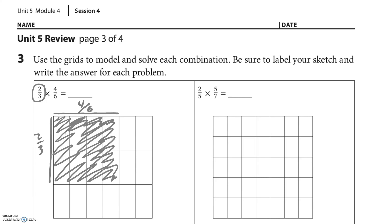It looks like there's 8 colored, and there's 6 in each row — 6, 12, 18 — so 8 out of 18. Now we can simplify that; they're both even numbers, so I'm going to divide by 2 over 2. I might be able to simplify it again — 4 ninths. I can't simplify further because 4 is even and 9 is not, and the only numbers that go into 4 are 2 and 4, and it doesn't help us. So, 4 ninths is our answer.